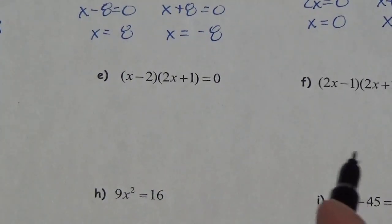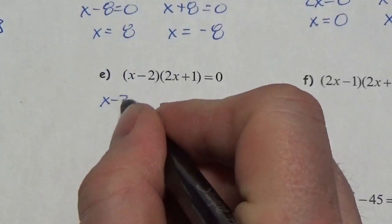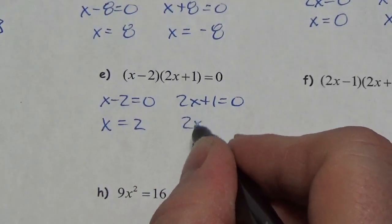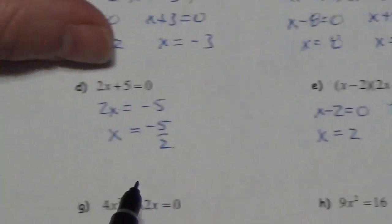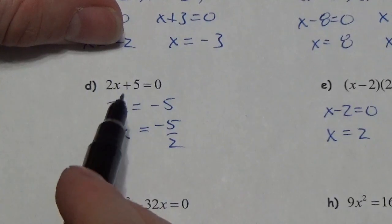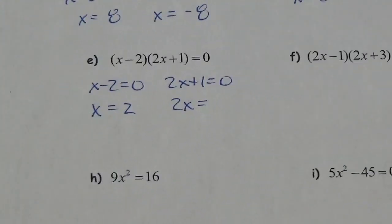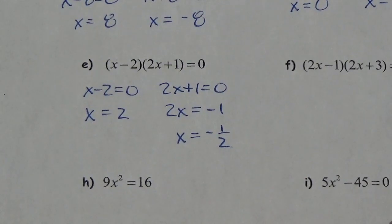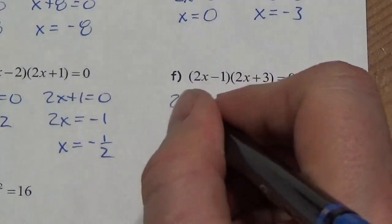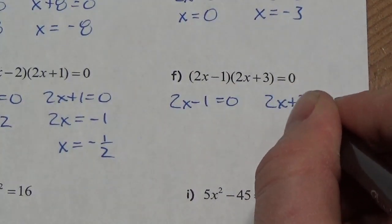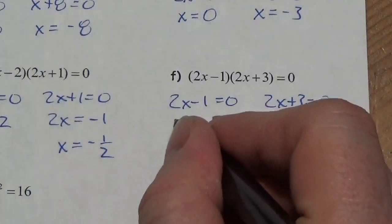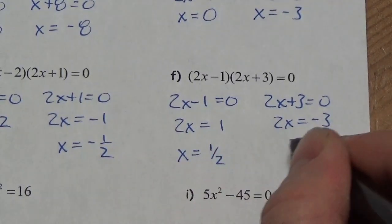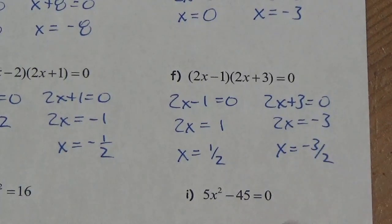For the next ones, it's already in factored form so the work is mostly done. Setting each factor to zero: from (x - 2) I get x = 2, and from the other linear factor I do it in two steps — bring the constant over then divide by the coefficient — giving x = -1/2. Similarly for (2x - 1)(2x + 3) = 0: either 2x - 1 = 0 or 2x + 3 = 0, giving x = 1/2 or x = -3/2.